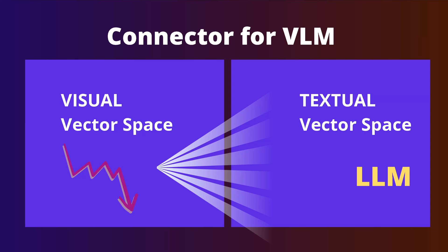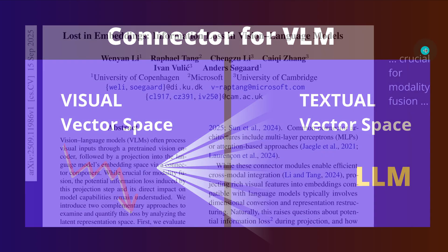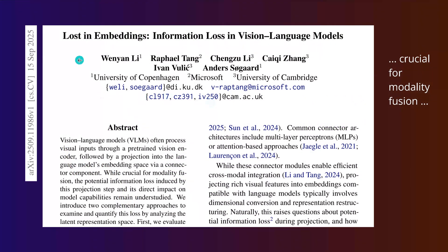Hello community, so great that you are back. We have some brand new AI research paper about vision language models, and we're going to talk about the visual vector space and the mapping to a textual vector space. This is the study from mid-September 2025, titled 'Lost in Embeddings' — the information loss that we encounter in our current vision language models.